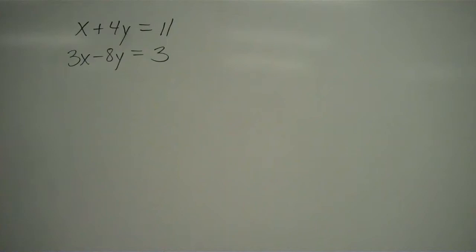We have a system of linear equations here that we'd like to solve. As I look at this, I'm thinking how should I approach this problem. I could solve for one of the unknowns in one of these equations and then substitute that into the other equation.